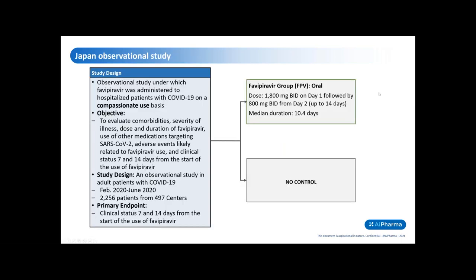On the efficacy end of the discussion, this is a Japanese observational trial that was conducted and is ongoing on favipiravir. The study design involves more than 490 centers throughout Japan and has recruited more than 2,200 patients to date. Given the observational nature of this trial, there is no control arm. Patients were administered favipiravir at a dose of 1,800 milligrams BID.